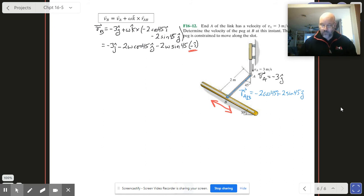Now on the other side of our equation over here we've got VBX I hat plus VBY J hat. So we'll break it up into two different equations as is typical. We're gonna have VBX and that's equal to the only X term I've got, which turns out to be 2 omega sine 45.